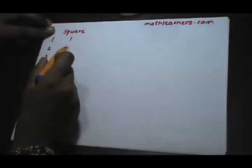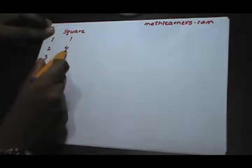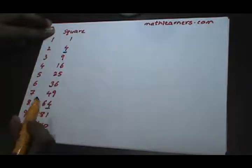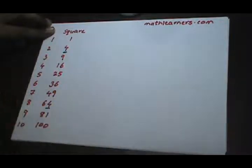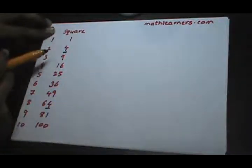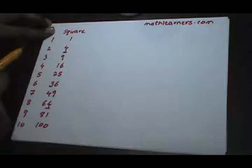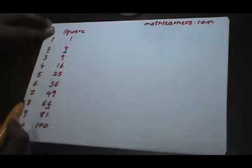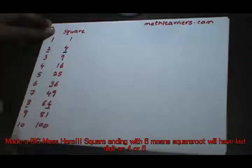If the perfect square is ending with 4, then there are only 2 possibilities — the square root of that number will be ending with either 2 or 8.